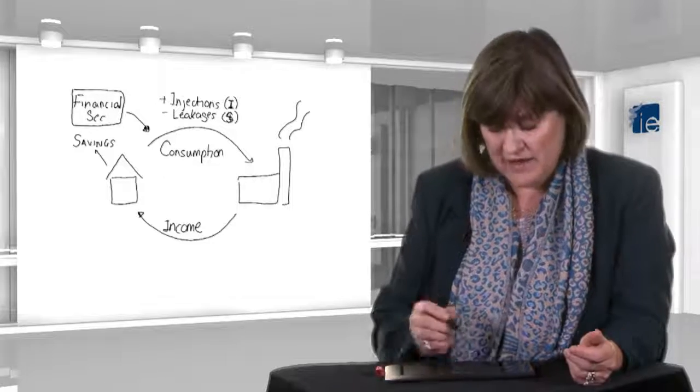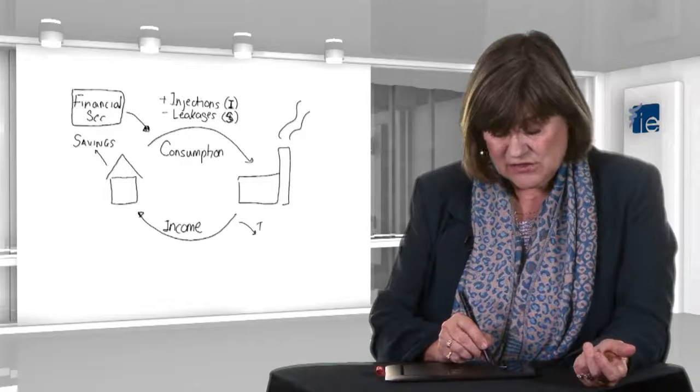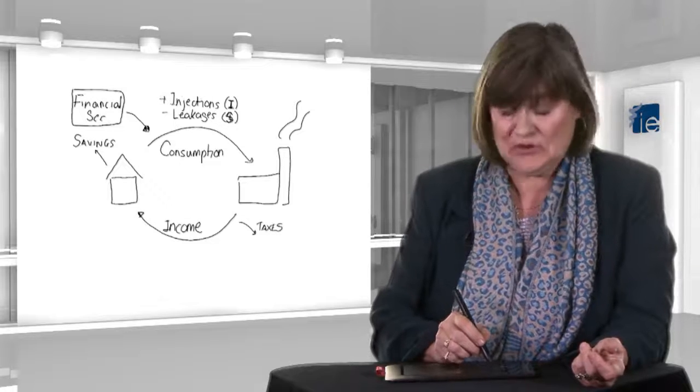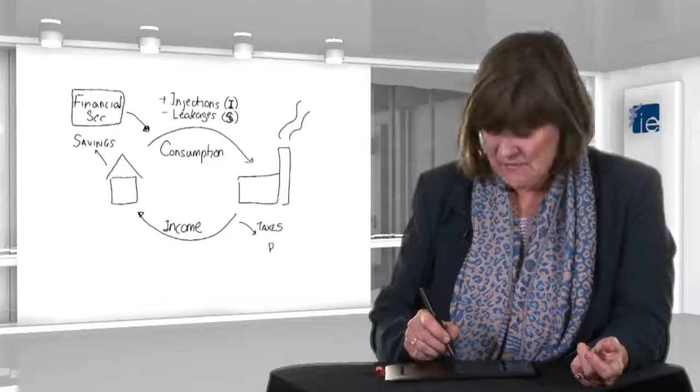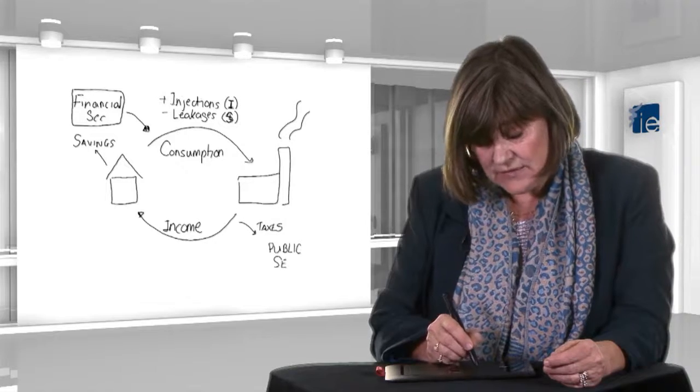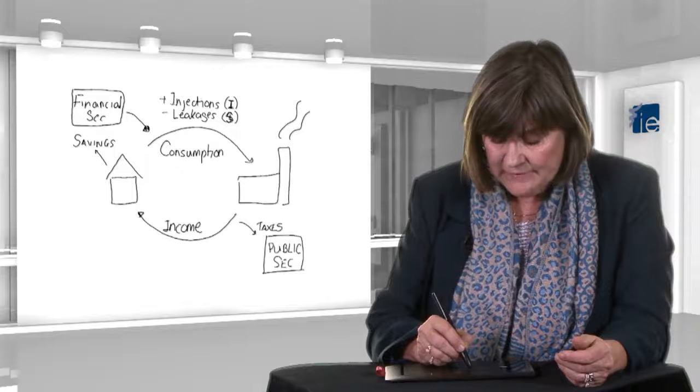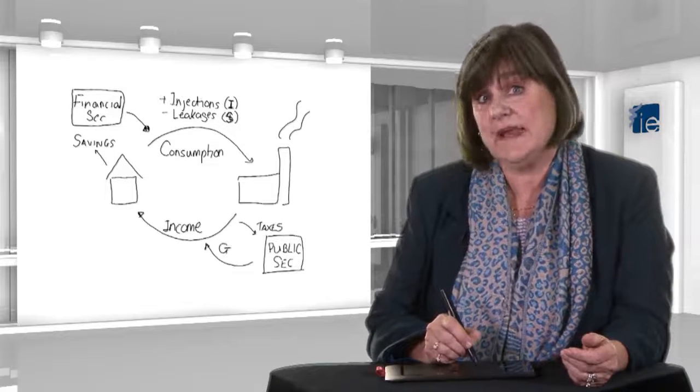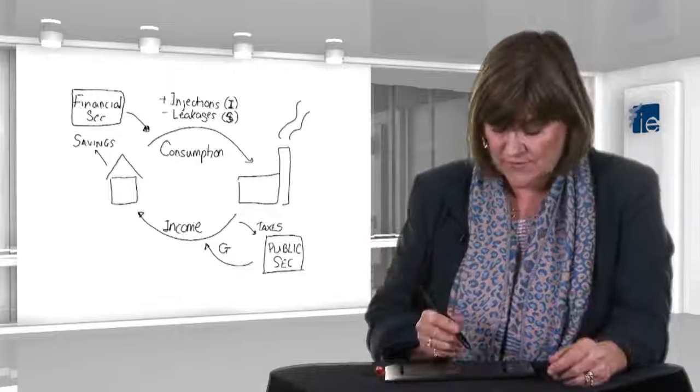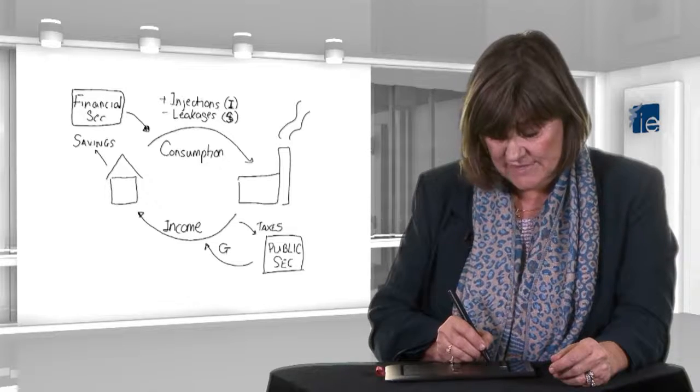Now, there's some other things that happen in the economy. Just to go through them briefly. Besides saving some of our money, we also pay taxes with some of it. In fact, we pay taxes every place in this circular flow. We pay taxes when we get our money, while we're spending our money, businesses pay. All kinds of taxes coming out. And these flow into the public sector. And the public sector then puts the money back in, in the form of government spending or in the form of transfer payments to people, unemployment benefits, pensions, and whatever. So you see that we have a new leakage, which is tax, and a new injection, which is government spending.